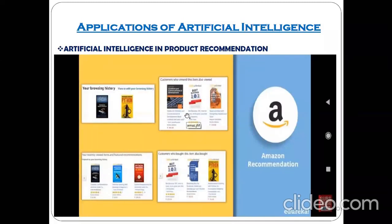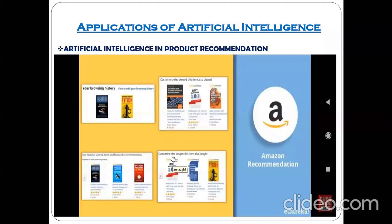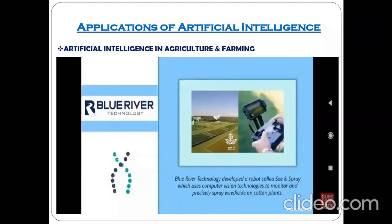On Amazon you can see messages like 'Customers who viewed this item also viewed' and 'Customers who bought this item also bought.' Those are examples of the recommendation engine at work. Amazon recommendation is one great example of artificial intelligence supported by machine learning.